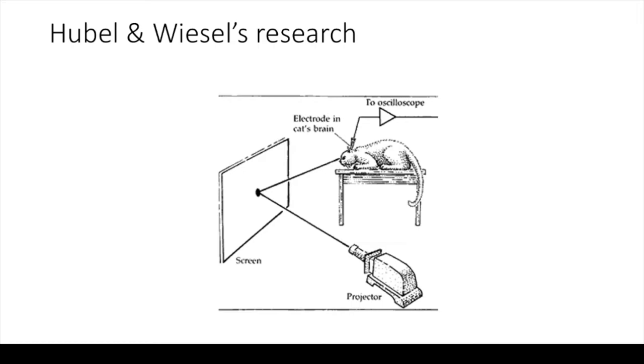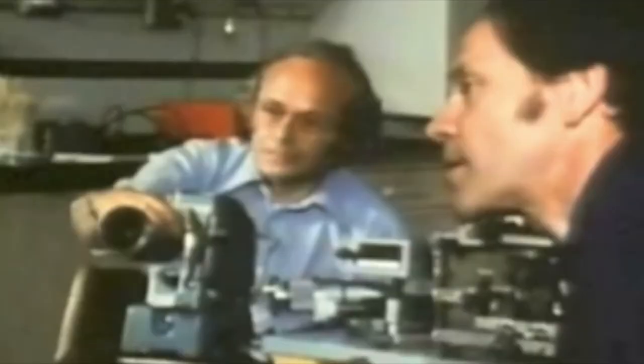They started by probing the simplest hypothesis, namely that cortical cells respond to dots, just like ganglion cells do. At the beginning, the results were disappointing. No matter how many stimuli they presented to the cat, the cells did not condescend to respond. They jumped up and down, flailed their arms at the cat, and nothing. They were at their wit's end. How is it possible that cells in the visual cortex won't respond to visual stimuli? Until they had their eureka moment.